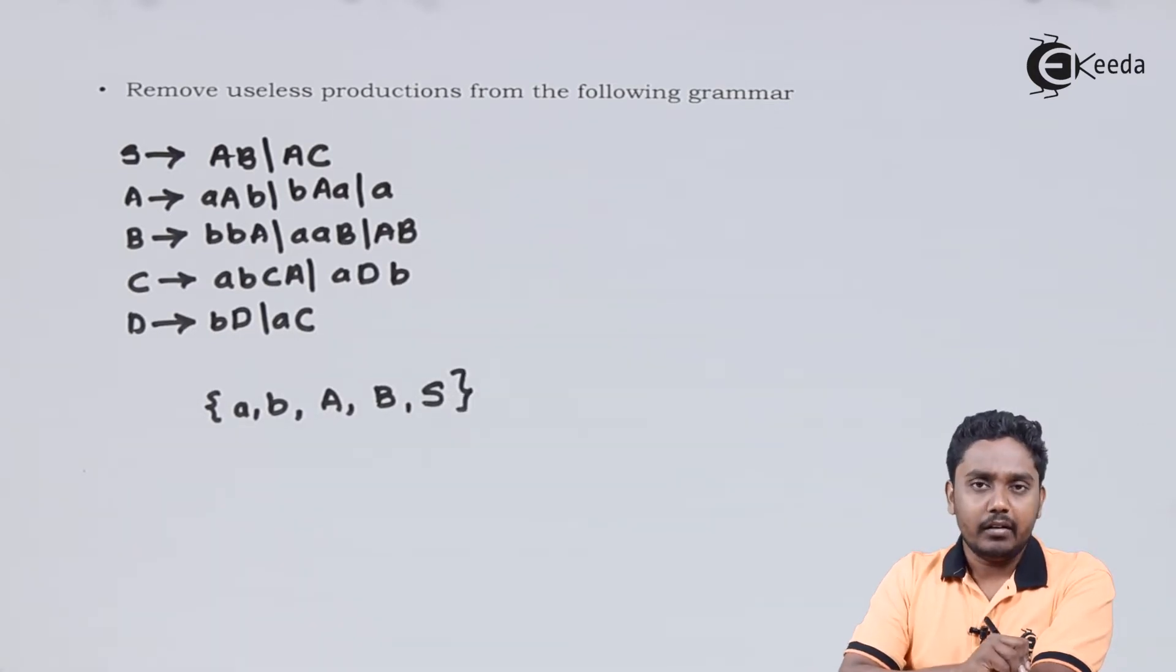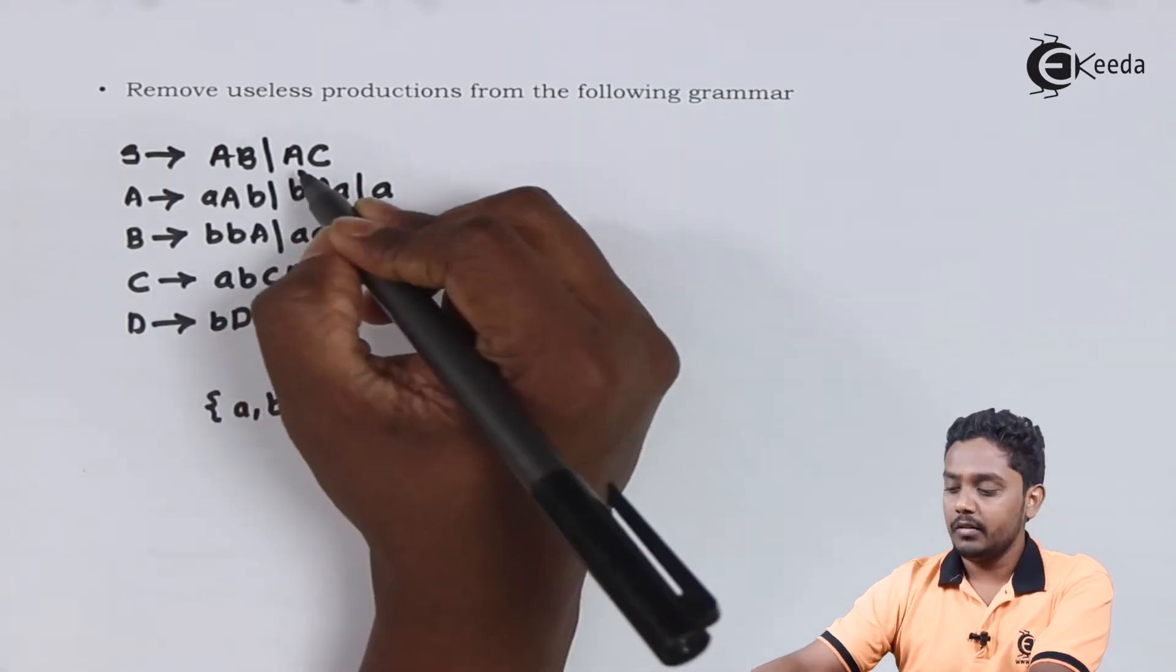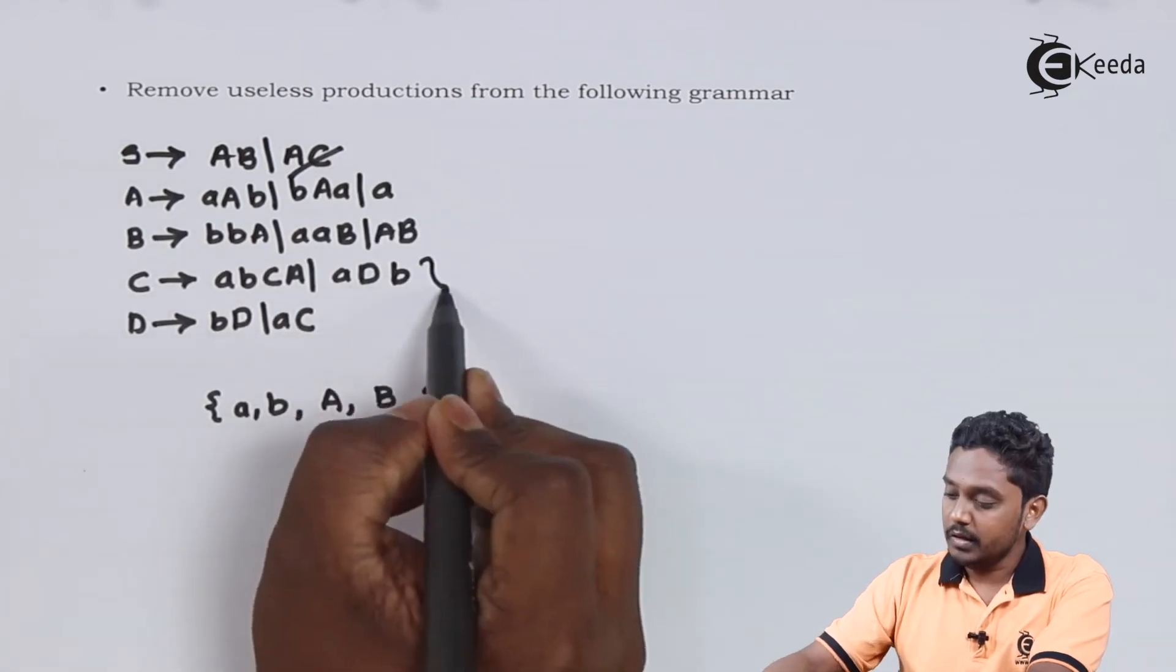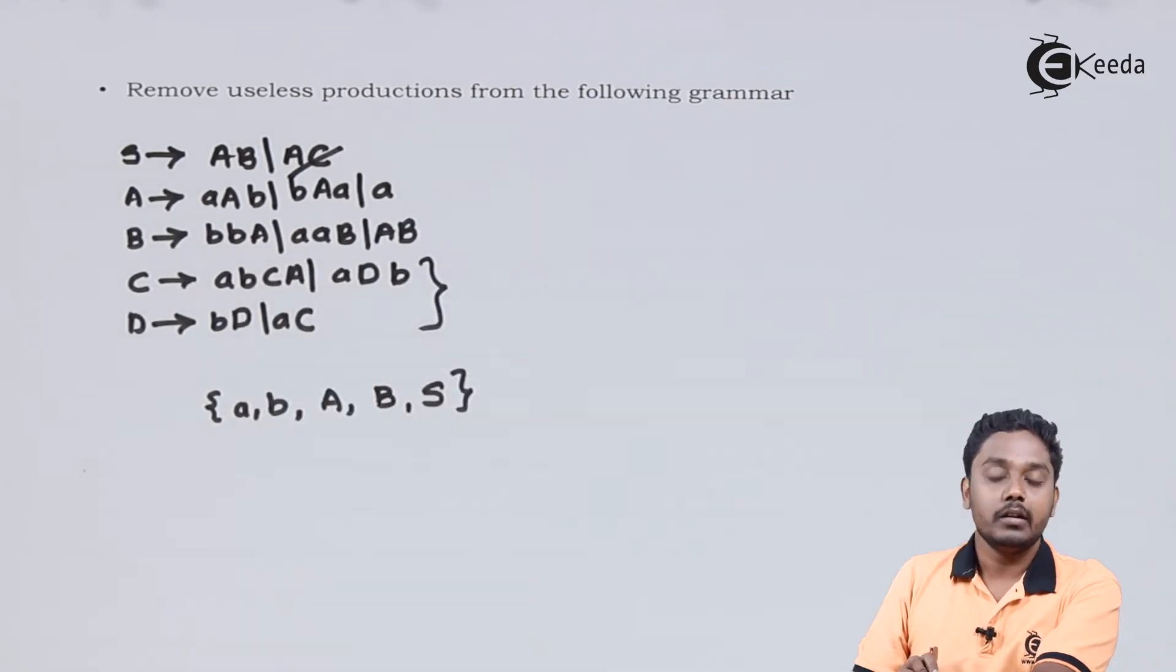Once we know that C and D are useless, we can eliminate all productions containing C and D. This will eliminate this production. All the productions beneath C and D.